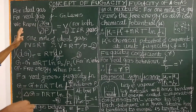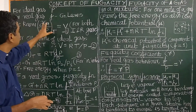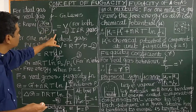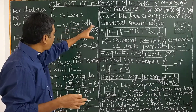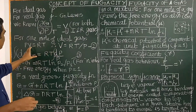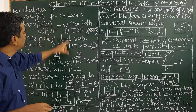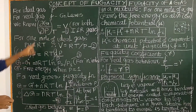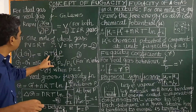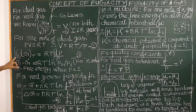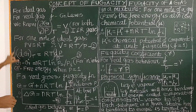We know from thermodynamics that the change of free energy with respect to change in pressure at constant temperature is equal to V. This is applied for both real and ideal gases. For one mole of ideal gas, PV = RT, therefore V = RT/P. On substituting V in this expression, dG at constant temperature is equal to RT/P dP. On integrating this equation, you will get G minus G naught.